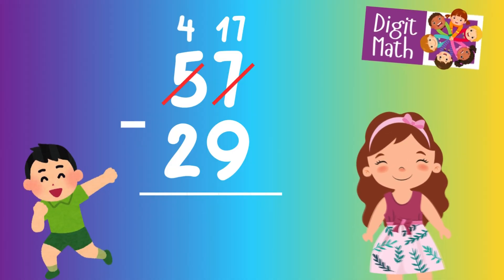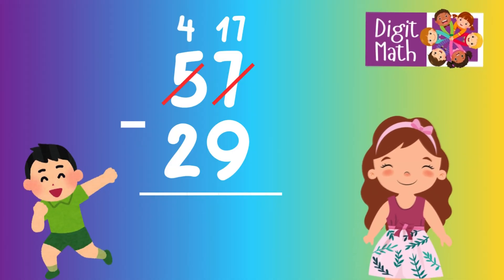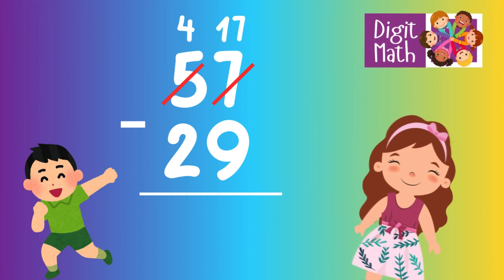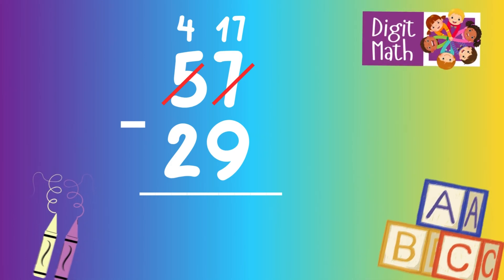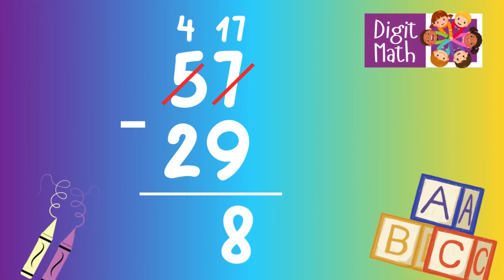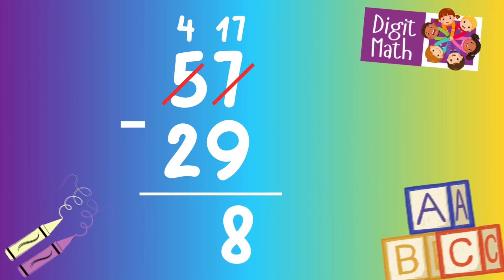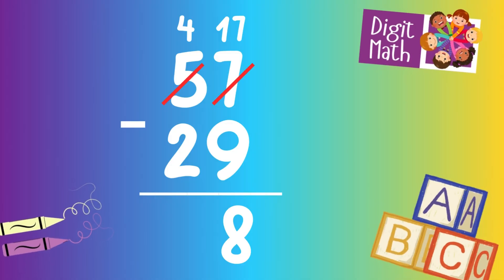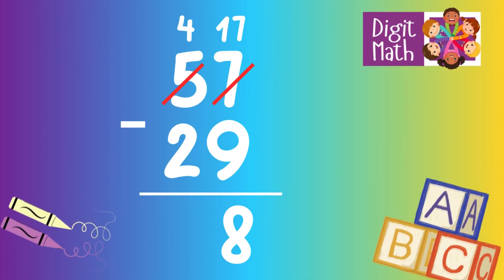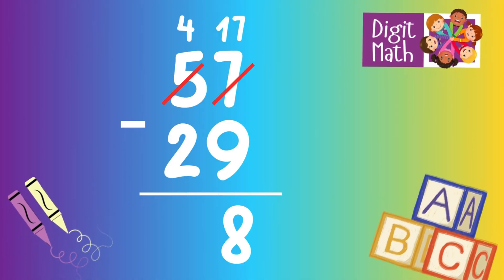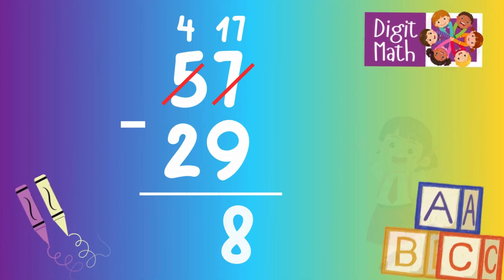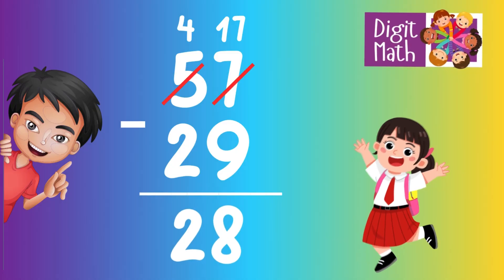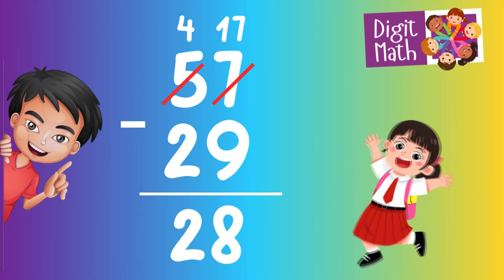Now we have 17 in the Units column. Subtract 9 from 17, which equals 8. In the Tens column, we now have 4. Subtract 2 from 4, which equals 2. So the final result is 57 minus 29 equals 28.